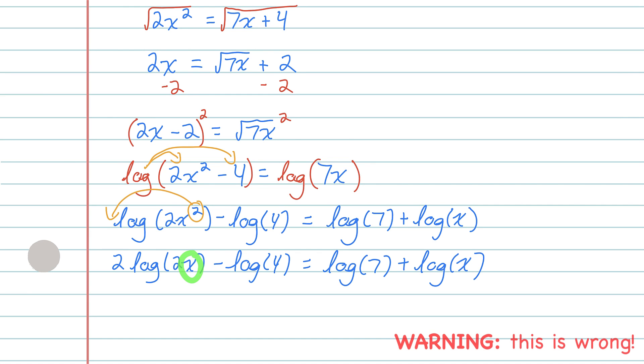Good. Now the x's just have exponents of 1 on them, so it should be easier to solve. And I notice all the terms have log. So let me just divide both sides by log to get rid of those. So when all of these logs cancel with the log they're being divided by, on the left, I've got 2 times 2x, which is 4x minus 4 equals 7 plus x.